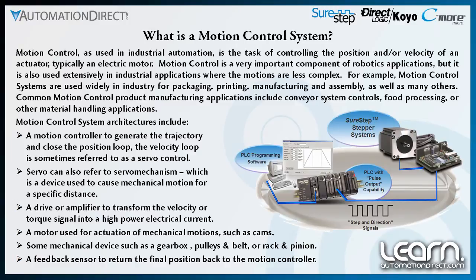What is motion control? Motion control, as used in industrial automation, is the task of controlling the position and/or velocity of an actuator, typically an electric motor. The actuator in many cases will be translated into linear positioning, although rotary position is also used in some applications. Motion control can be found in applications ranging from robotics, packaging, pick and place applications used in product assembly, and material handling equipment. A motion control system typically consists of a controller that generates signals for the motion profile, a drive or amplifier to transform the motion signals into proper high-power electrical currents and voltages, an electrical motor driven by the drive that creates mechanical motion, and some form of mechanical device such as a gearbox, rack and pinion, or pulleys and a belt that translate the motor's rotary motion into the final work motion.